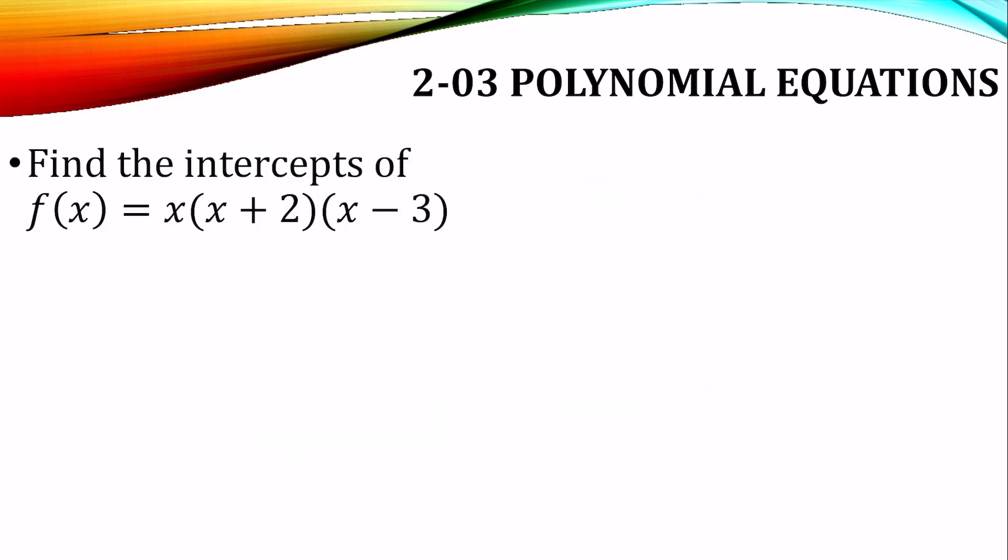Alright. Let's find the x-intercepts of this polynomial function. So to start with the x-intercepts, the x-intercepts occur when y is zero. So we'll make it equal to zero.